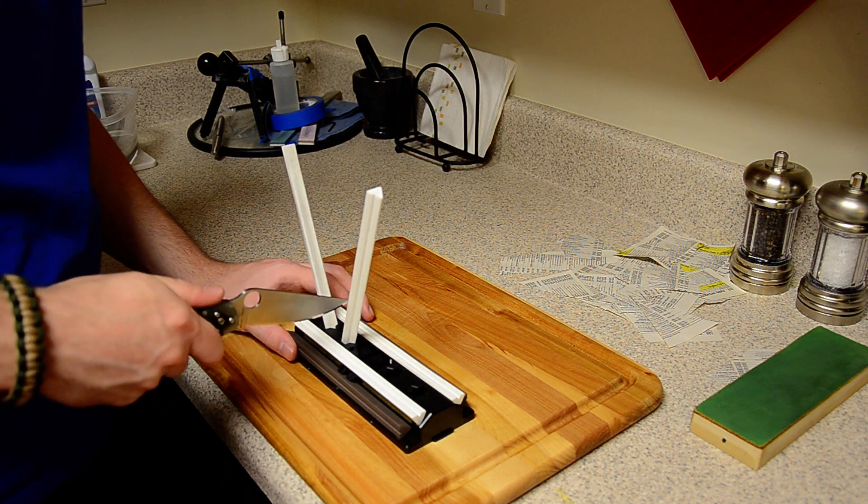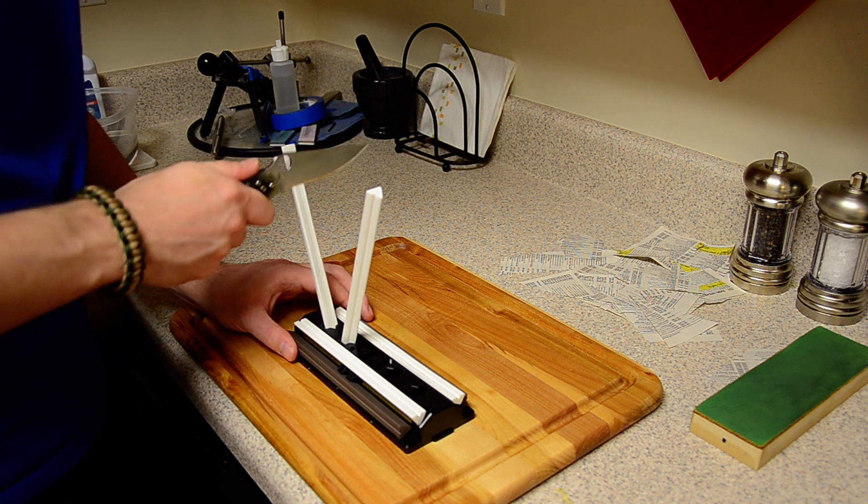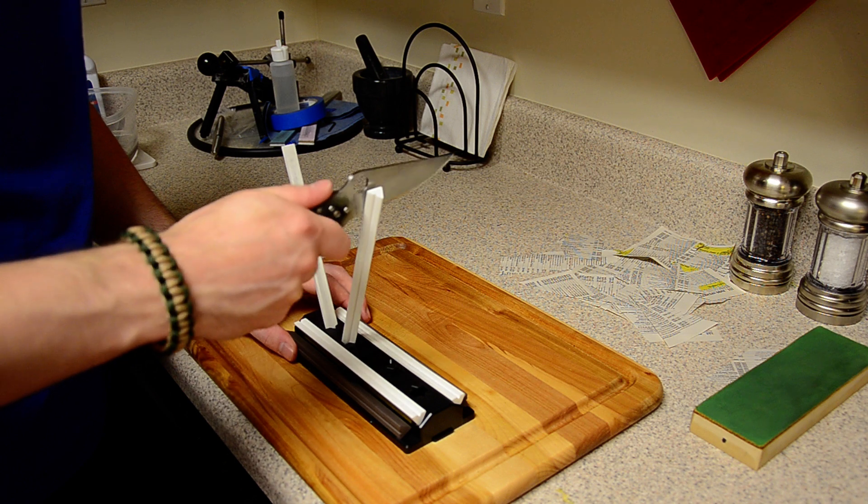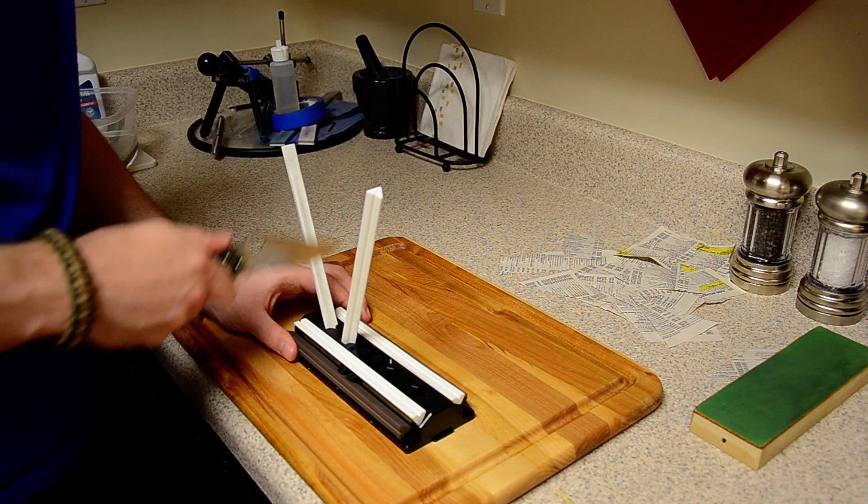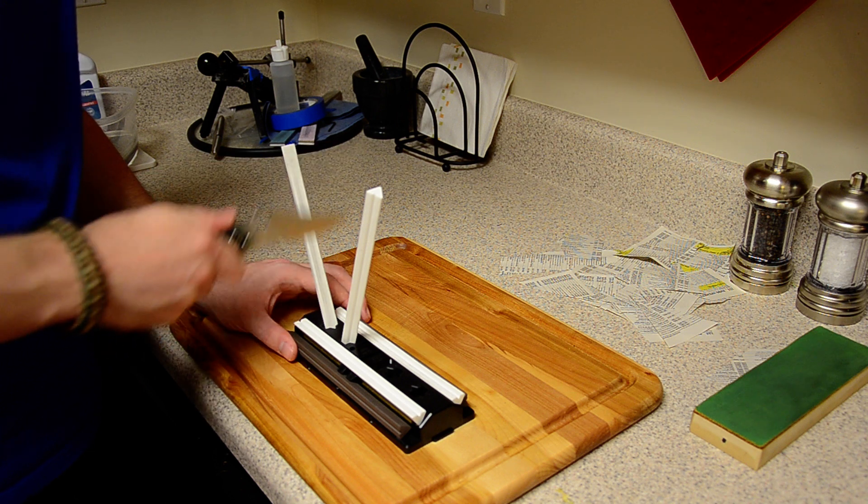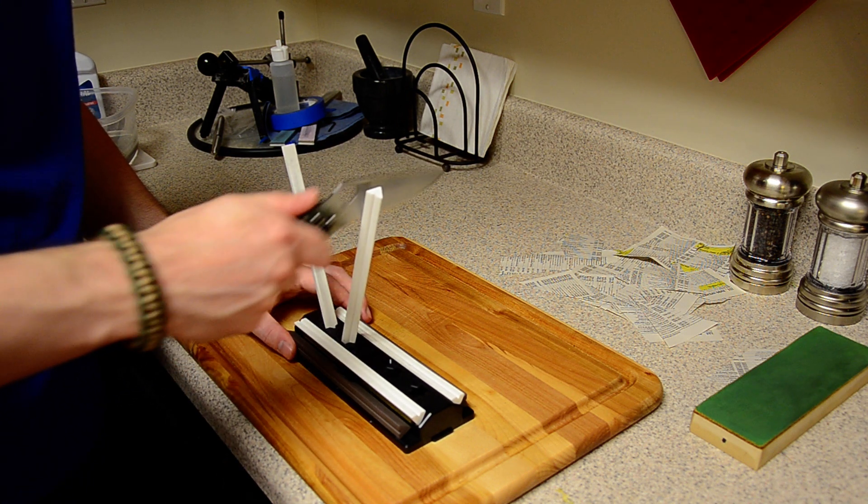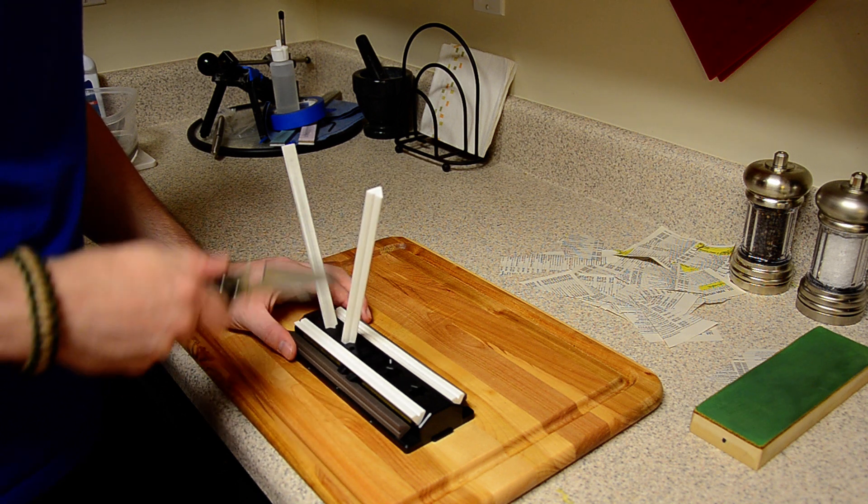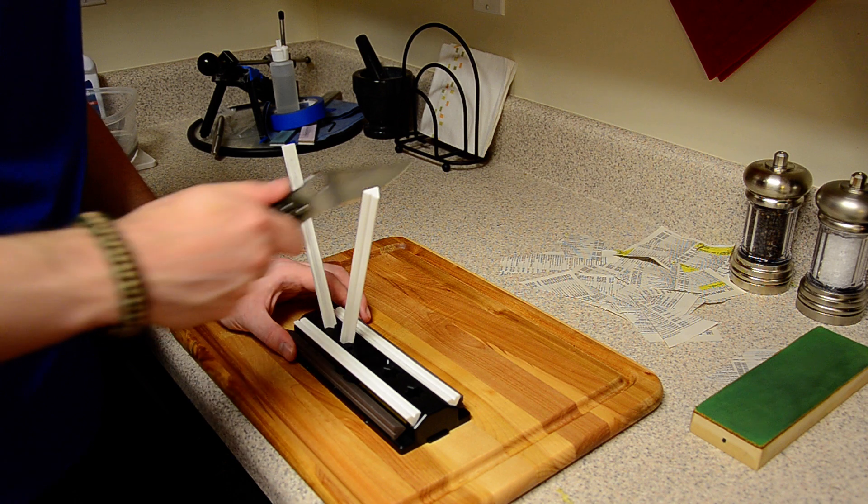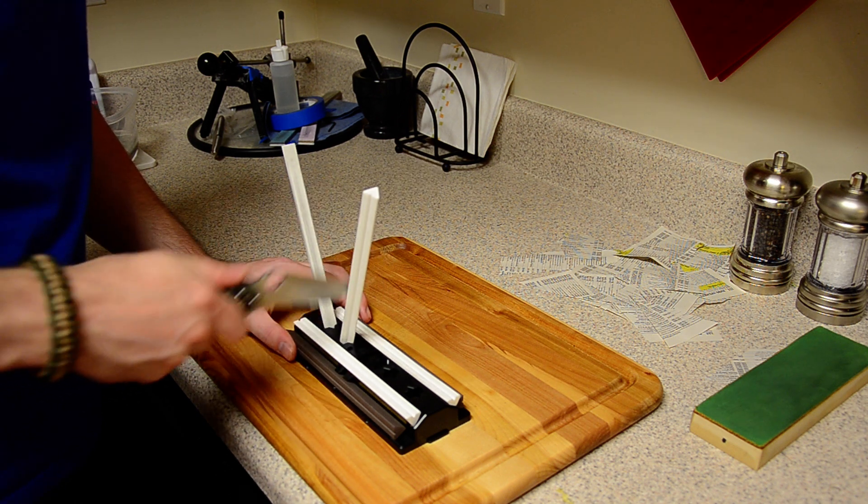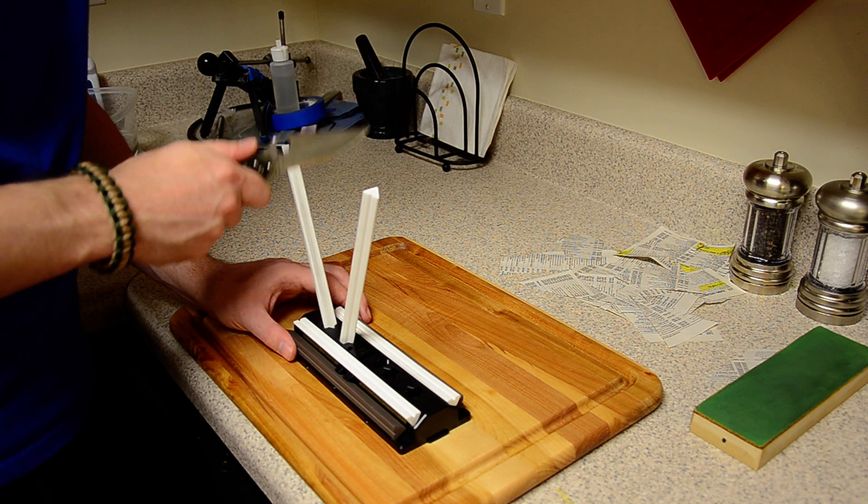You can't take a very coarse edge and then hit it on a very fine rod or stone and expect it to get a mirror polish. You have to have a fairly refined edge to get a mirror polish. You can't take something like a 400 grit edge and run it on a 5000 grit stone and expect a mirror polish, it's just not going to happen like that. You have to progress through the grits and get finer and finer until you're eventually mirrored.